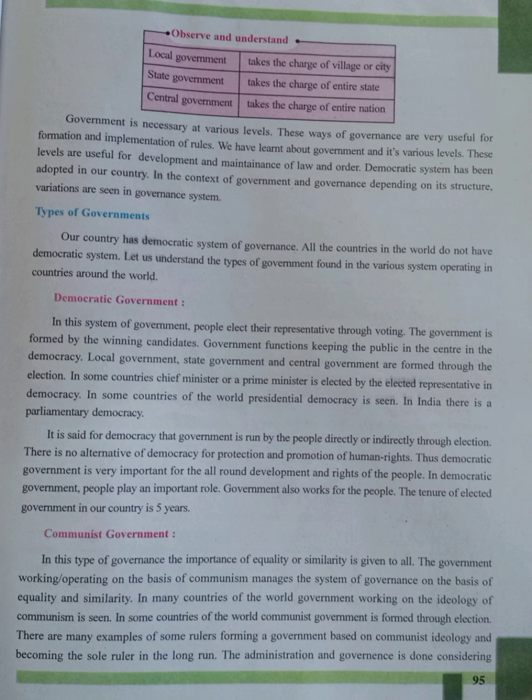In a democratic government, people play an important role and the government also works for the people. The tenure of elected government in our country is 5 years. There are three main types of government: first is democratic government, second is communist government or dictatorship, and the third is monarchy.